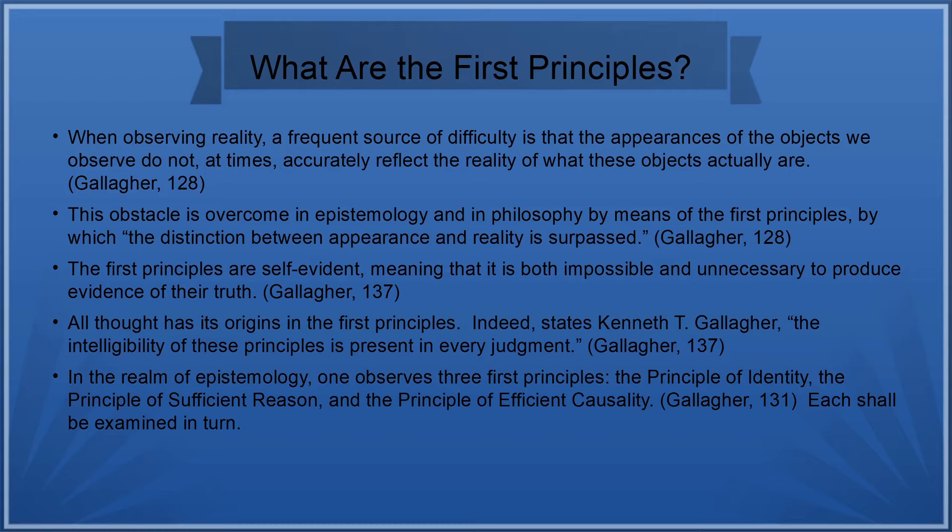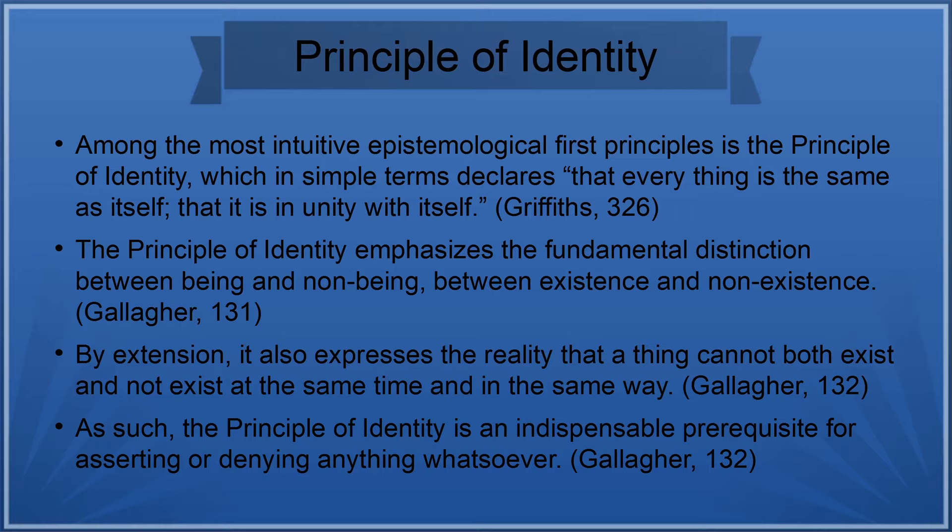Indeed, states Kenneth T. Gallagher, "The intelligibility of these principles is present in every judgment." In the realm of epistemology, one observes three first principles: the principle of identity, the principle of sufficient reason, and the principle of efficient causality. Each shall be examined in turn.